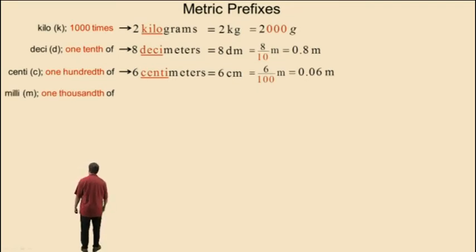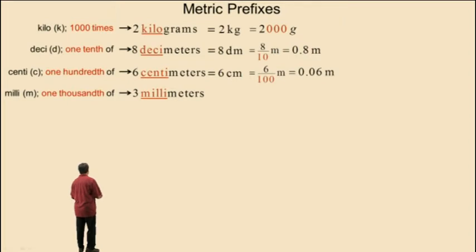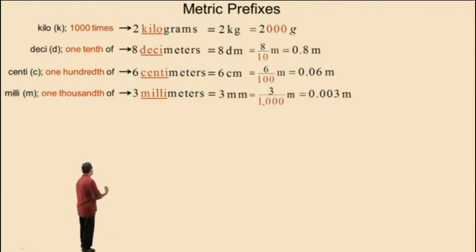Milli, abbreviated with the letter m, means one thousandth of. Therefore, 3 millimeters, written as 3 mm, is equivalent to 3 one thousandths of a meter. As a decimal, that's 0.003 meters.